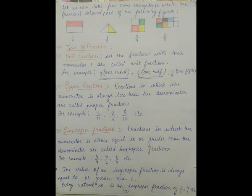Similarly, if a rectangle is divided into eight equal parts and five out of the eight equal parts are shaded, the fraction representing the colored part is five by eight.